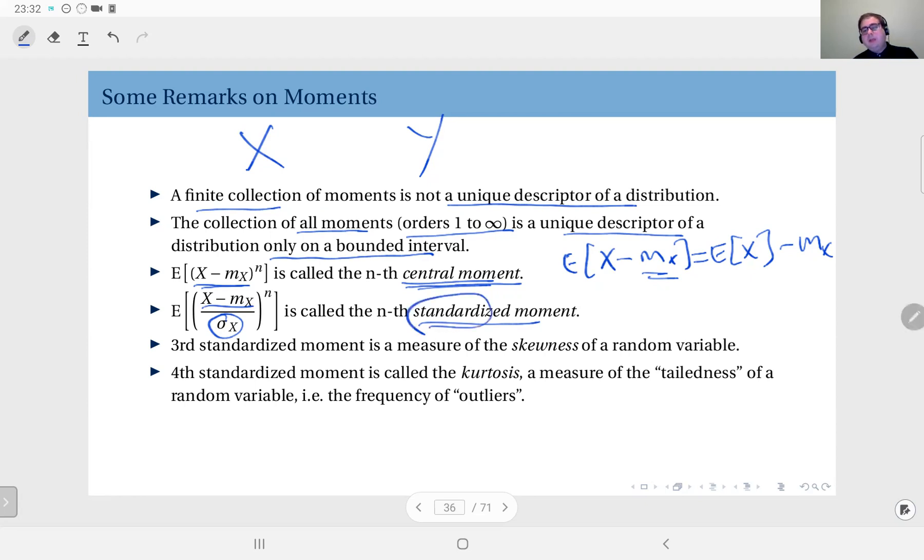Standard here means it has zero mean and it has a variance of one. That's what we mean by standard. Here in this course, standard random variable will mean zero mean and a variance of one.